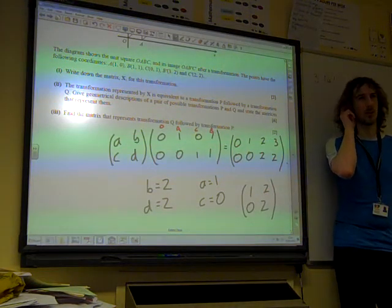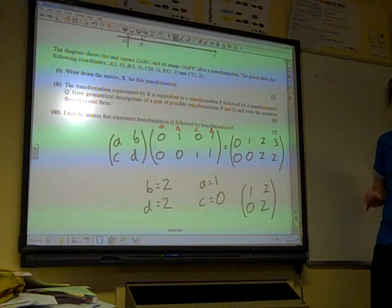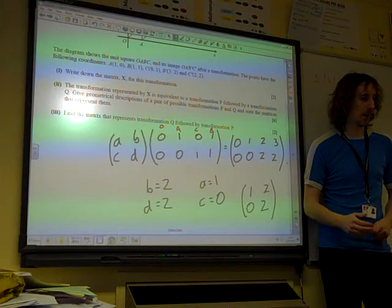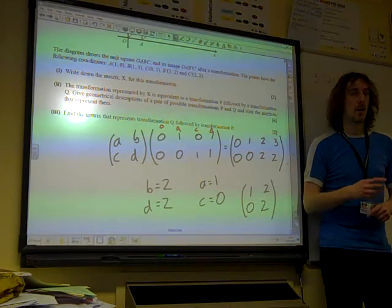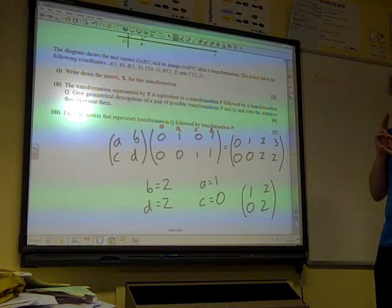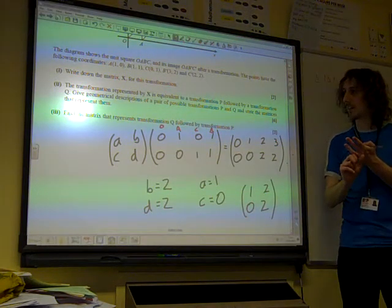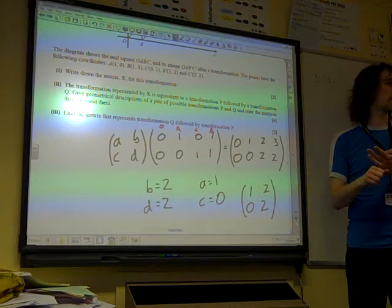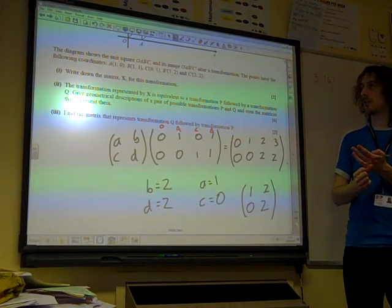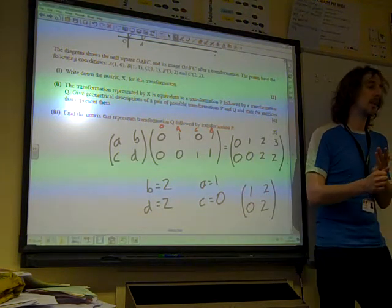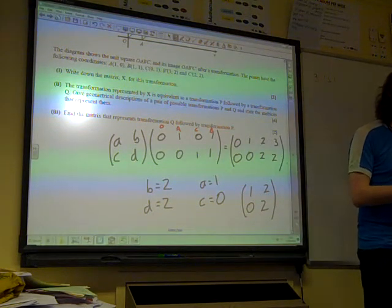And there are all sorts of ways that you could have figured it out. And that feels like a lot of work at two moments, but that's kind of going through all the steps really carefully with it. Now we've got to explain that the transformation is equivalent to a transformation P, followed by a transformation Q. Give geometrical descriptions of a pair of possible transformations, and state the matrices that represent them.